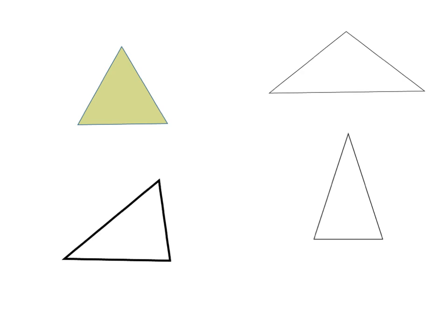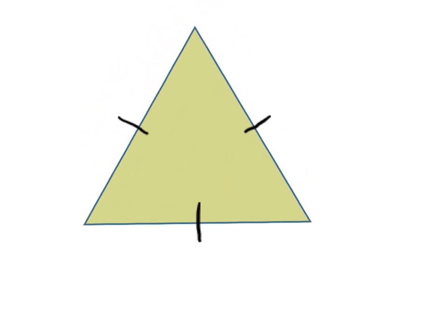I can also name these triangles by looking at their angles. Looking at this equilateral triangle, because the three side lengths are the same, it also means that the three angles are the same. I'm going to indicate that by doing angle, angle, angle — a little dash at each to show these three angles are the same measure.